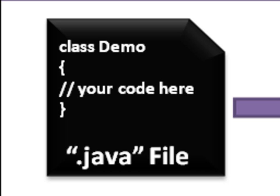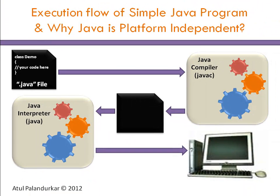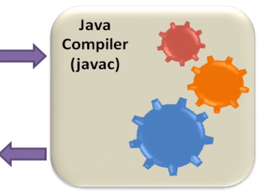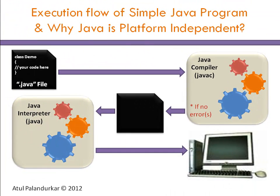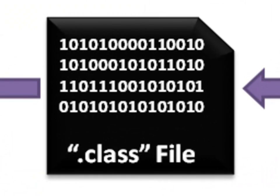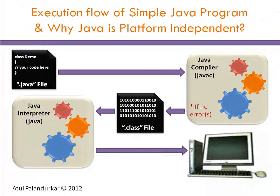To run any Java program, we require two steps: step one is compilation and step two is interpretation. For compilation, we require the Java compiler, commonly known as javac, which is used to compile the .java file. During the compilation process, the Java compiler will compile each and every statement. If there are no errors, it will produce a .class file; if there are errors, it will not produce the class file and will throw an error message on the output screen.